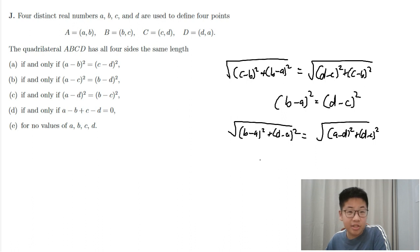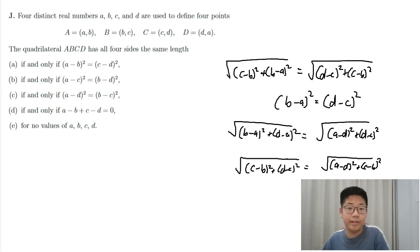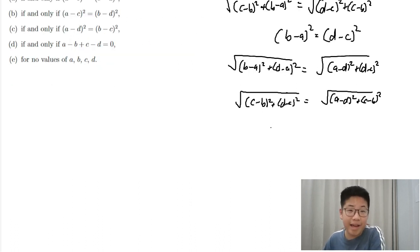We got the same equations, so we had to switch to another pair of points. Let's say C minus B squared plus D minus C squared equals A minus D squared plus C minus B squared. So this means that D minus C squared equals A minus D squared.